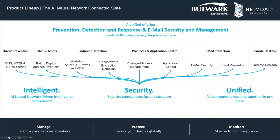We also do software asset management where you get all the details of the applications running on your premises, including hardware specifications and details, all visible in the same console. We also have a software deployment tool where you can deploy software across your network. That's our second module. The third segment is endpoint detection, with two modules: a next-generation antivirus with basic Windows firewall management and MDM, and a separate ransomware encryption detection module that can sit on top of any antivirus.